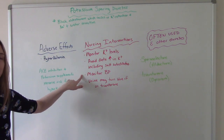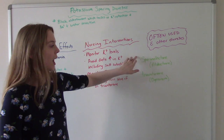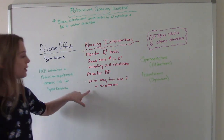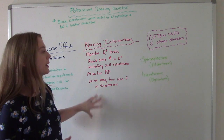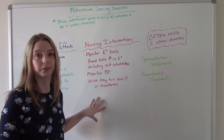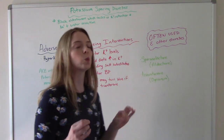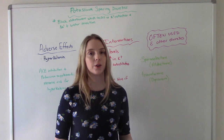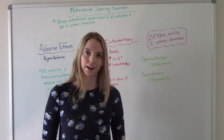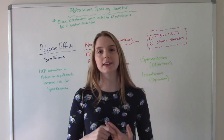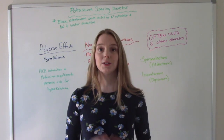Of course, monitor their blood pressure. Certain types of potassium-sparing diuretics can actually cause the urine to turn blue, which can be alarming for patients, so thorough patient education is required. Potassium-sparing diuretics are very rarely used by themselves — they are most often used in conjunction with another diuretic, such as a loop diuretic or a thiazide diuretic.